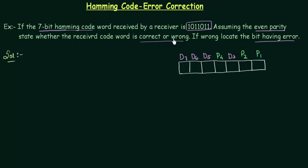So there are a few points that I am going to explain you again. It is a 7-bit Hamming code so I have made this 7-bit Hamming code already. And the bit stream received by the receiver is 1011011. So let's write it down: 1011011. Now we have to check whether the bit stream sent by the sending end is correct or not. And for that we require this information that it is the even parity. We have to locate the bit having the error. So let's start with it.